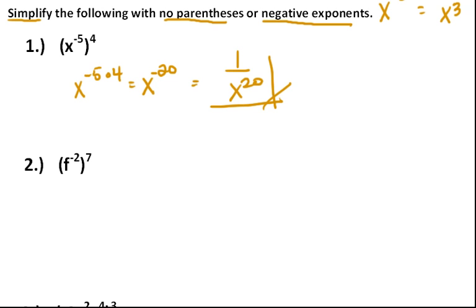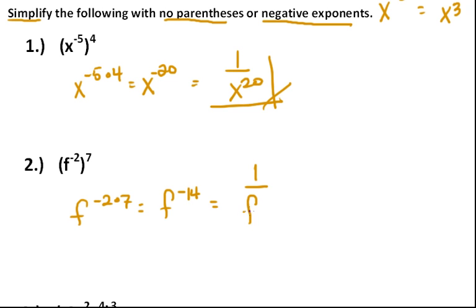Number two is the same sort of thing. Let's use the power rule to get rid of those parentheses. So we would have f to the minus two times seven, which gives us f to the minus fourteen. To get rid of that negative exponent, we place it under one, so the answer is one over f to the fourteenth.